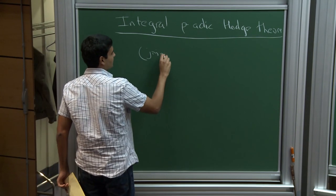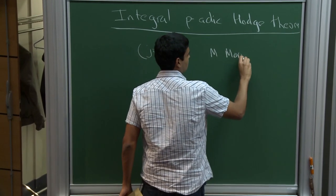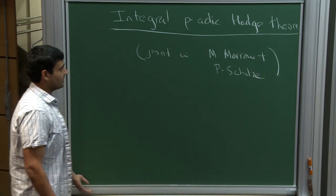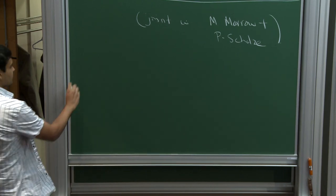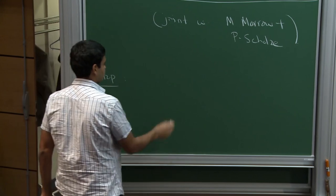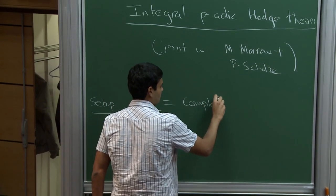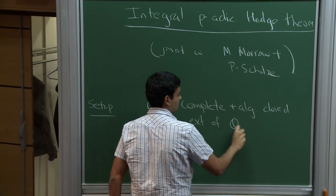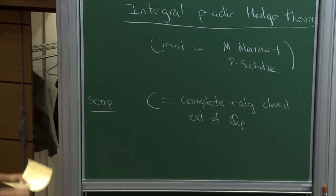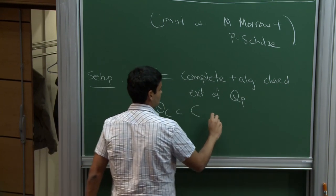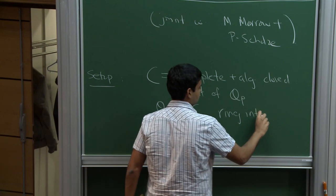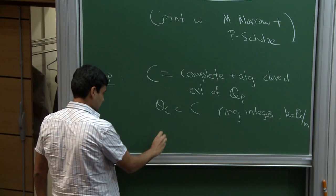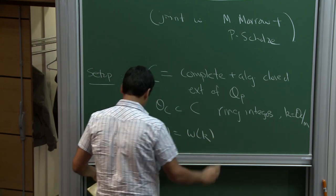This is joint work with Matthew Morrow and Peter Schultz. I want to talk about certain integral cohomology theories and relations between them. The setup I'll fix once and for all is the following: C is going to be some complete and algebraically closed extension of Q_p. For example, C equals C_p. O_C is the ring of integers, and little k is the residue field of O_C. This is a valuation ring and it's a perfect field. And then we also have the ring of Witt vectors of k.